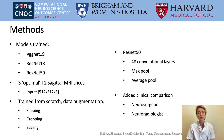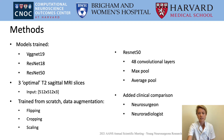The ResNet-50 model specifically consists of 48 convolutional layers, one max pool, and one average pool layer. We also added a clinical comparison of both a neurosurgeon and a neuroradiologist that were presented with the same baseline information as the algorithm and that used the Matsumoto grading scale to judge whether they found it likely that a patient would have to undergo additional surgery after the initial procedure.